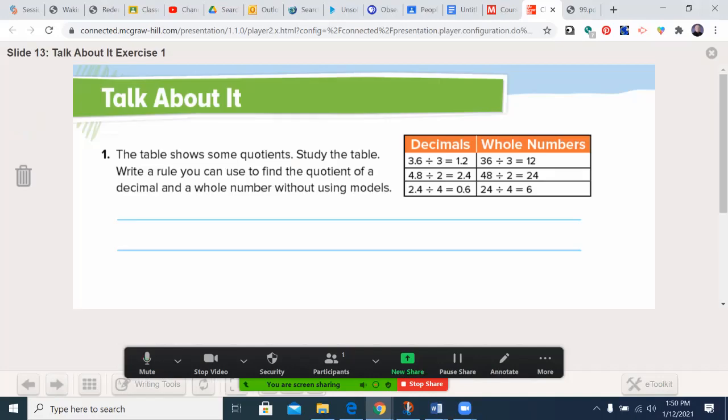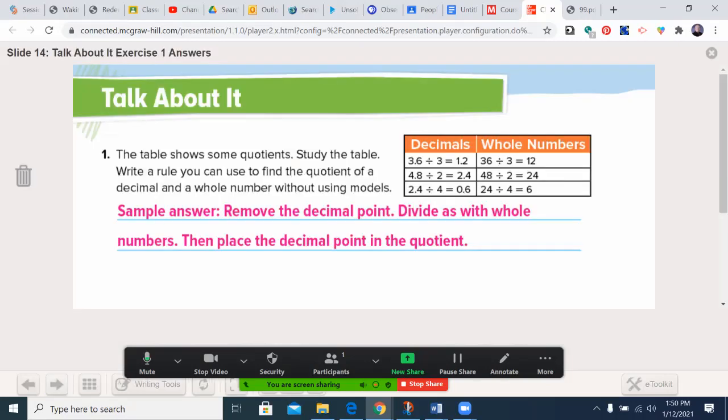All right. I'm going to go ahead and clear the drawings. And now let's talk about, study the table. Write a rule you can use to find the quotient of a decimal and a whole number without using models. Well, very similar to what we did with multiplication. You can start seeing that 36 divided by 3 is 12. 3.6 divided by 3 is 1.2. Oh, wait a minute. There's one decimal spot. We had one decimal spot. 4.8 divided by 2 is 2.4. It's the same as 48 divided by 2 equals 24. Just include the decimal spots. 2.4 divided by 4 is 0.6. Just like 24 divided by 4 is 6.